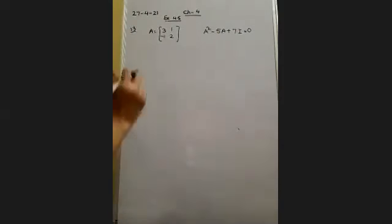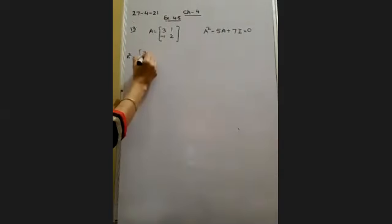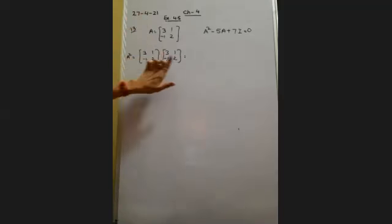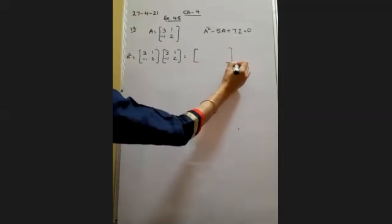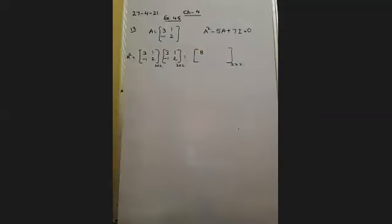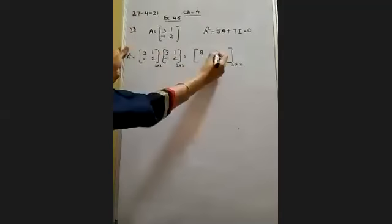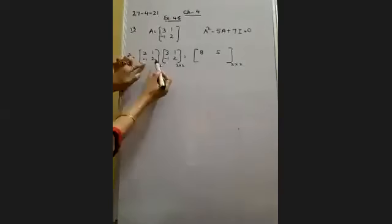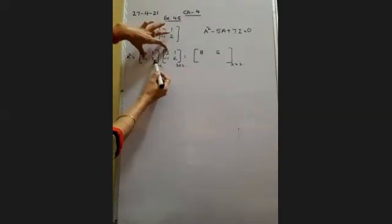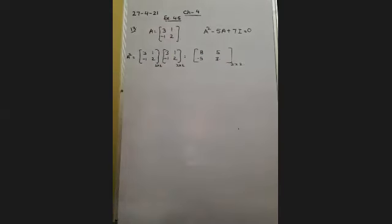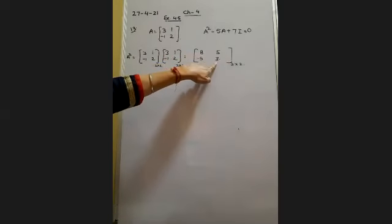First, compute A² = A × A = [3, −1; 1, 2] × [3, −1; 1, 2]. First element: 3×3 + (−1)×1 = 9 − 1 = 8. A12 position: 3×(−1) + (−1)×2 = −3 − 2 = −5. A21: 1×3 + 2×1 = 5. A22: 1×(−1) + 2×2 = −1 + 4 = 3. So A² = [8, −5; 5, 3].